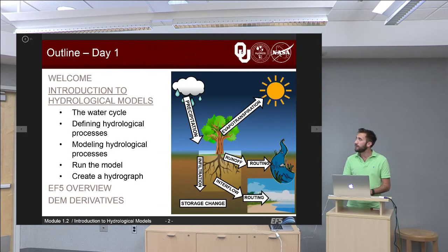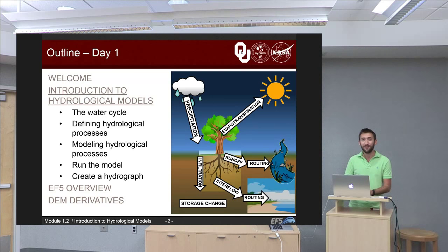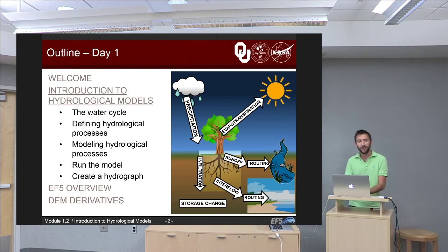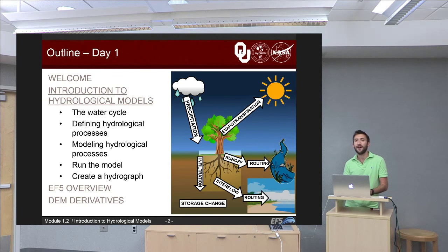We're now on to the second module. If you haven't watched the video for the Welcome Module, which is the first one, you should go back and do that before you continue. If you've already done the Welcome, then welcome once again. Now we'll get started with Module 2: An Introduction to Hydrological Models. In this module we're going to talk about the water cycle, define a series of hydrological processes, talk about how we model those processes, and then at the end we're actually going to run EF5 for the first time and it will create a hydrograph based on the results of that initial run.